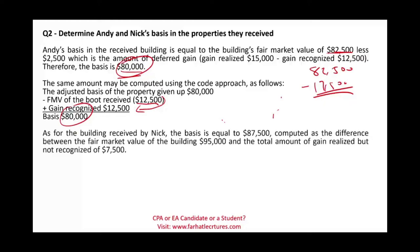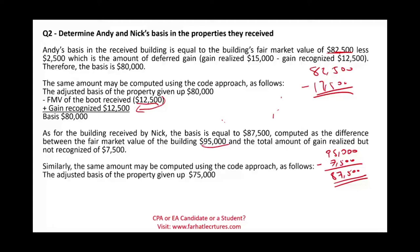As for Nick, the basis equals the fair value of the asset received — $95,000 — minus the deferred gain of $7,500 (the full amount, since Nick recognized nothing), giving Nick a basis of $87,500. Using the code approach: adjusted basis of the property given up by Nick is $75,000, plus the adjusted basis of the boot given of $12,500, which also equals $87,500.